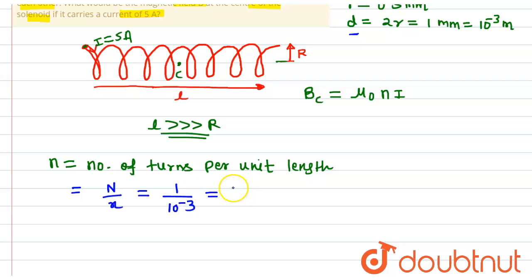The number of turns per unit length will be 10 to the power 3. We have to use this value. μ₀ can be given as 4π times 10 to the power minus 7, n is given as 10 to the power 3, and current is given as 5.